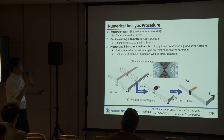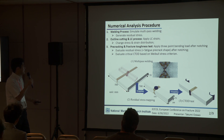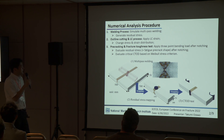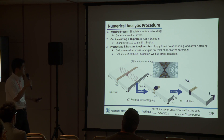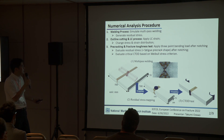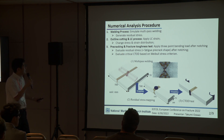This slide shows the FEM analysis procedure. In the welding process, multi-pass welding was simulated and residual stress was generated in the specimen with 15 mm thickness. In outline cutting and the LC process, LC strain was applied and the stress and strain distribution changed. In pre-cracking and the fracture toughness test, three-point bending load was applied, and residual stress and fatigue pre-crack shape were evaluated, and critical CTOD was evaluated based on the viable stress criterion.